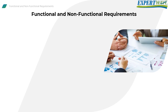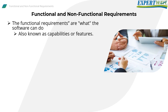The functional requirements involve what the system will do or execute precisely — it is what the software can do. Usually, a tester can perform a simple test to see if the software possesses such a requirement or not. For example, the system can add, delete, or print a record in a database. They are sometimes known as capabilities or features.